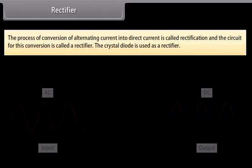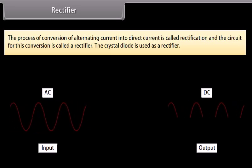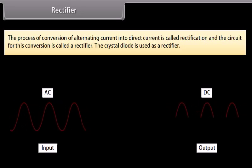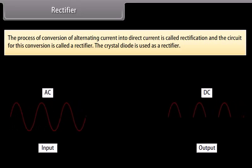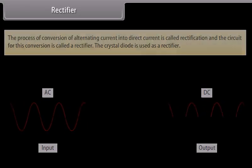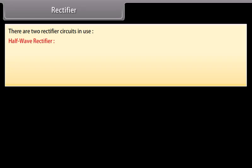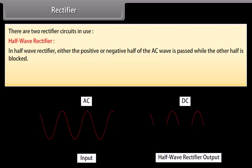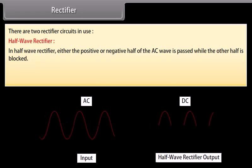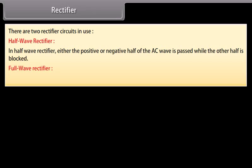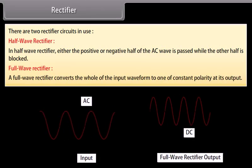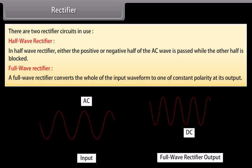Rectifier: The process of conversion of alternating current into direct current is called rectification, and the circuit for this conversion is called a rectifier. The crystal diode is used as a rectifier. There are two rectifier circuits in use. In a half-wave rectifier, either the positive or negative half of the AC wave is passed while the other half is blocked. A full-wave rectifier converts the whole of the input waveform to one of constant polarity at its output.